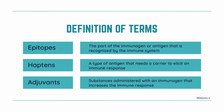Let's take a look at some terms we will usually encounter when studying antigens in immunology. First is epitopes — this is the part of the immunogen or antigen that is recognized by the immune system. Next, we have haptens, which is a type of antigen that needs a carrier to elicit an immune response. Next, we have adjuvants. These are substances administered with an immunogen that increase the immune response against the substance. Usually, we find adjuvants in vaccines.